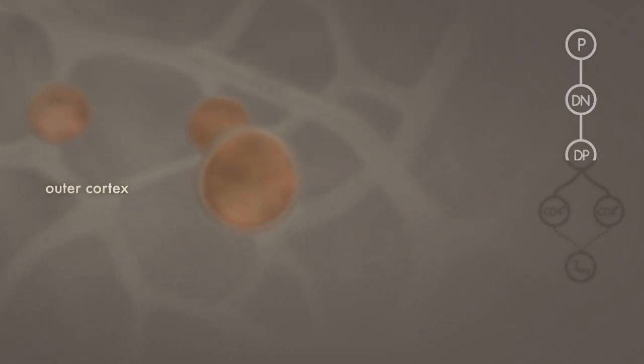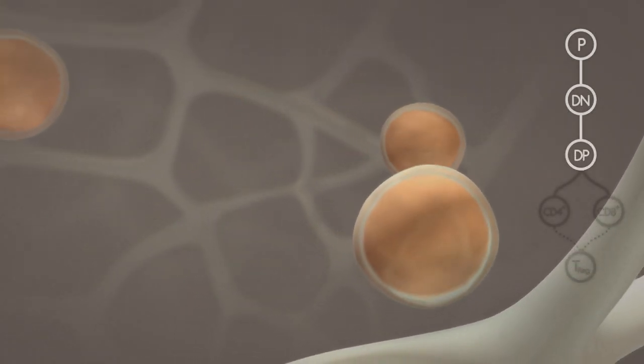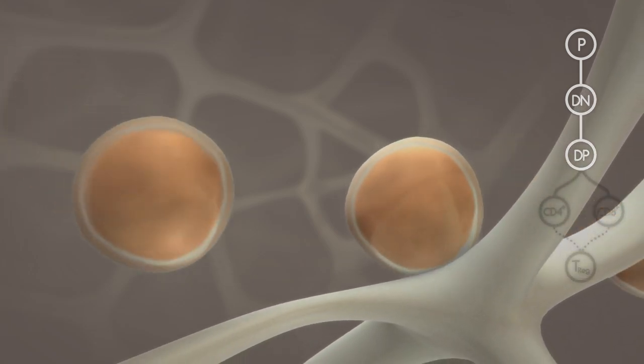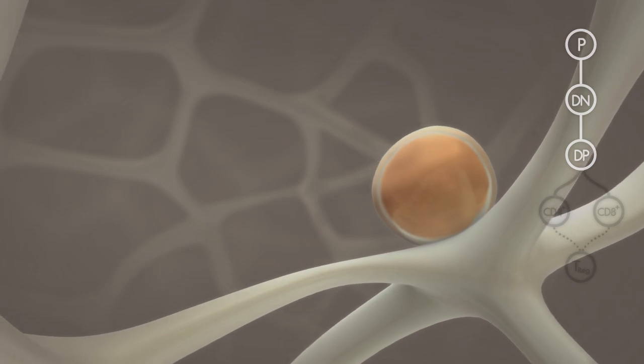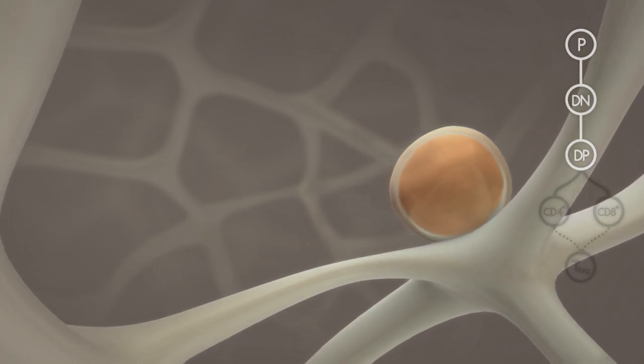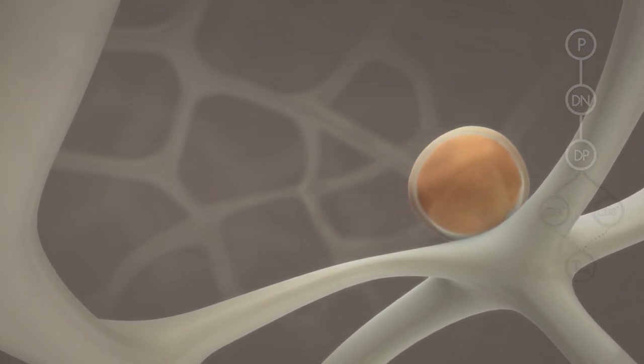DP thymocytes generated in the outer cortex are motile, interacting through their TCR with peptide MHC complex expressed by cortical thymic epithelial cells. This interaction begins the process of negative and positive selection.